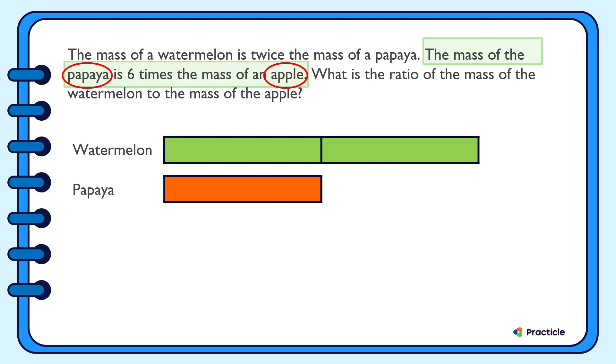And which fruit is heavier? Since the mass of the papaya is six times the mass of an apple, the papaya is the heavier one. So how do we draw the model for this?